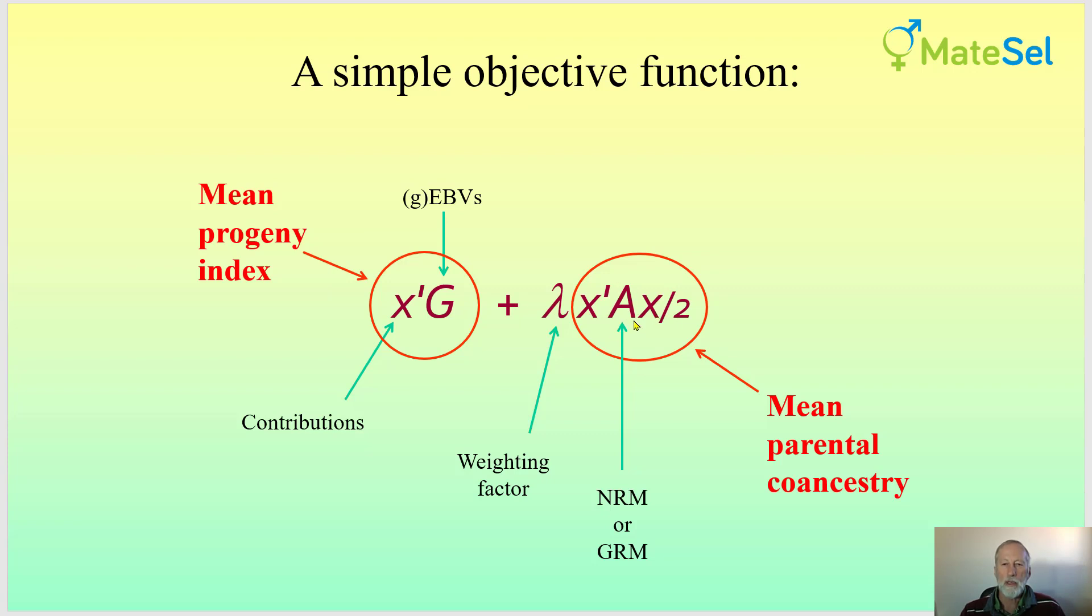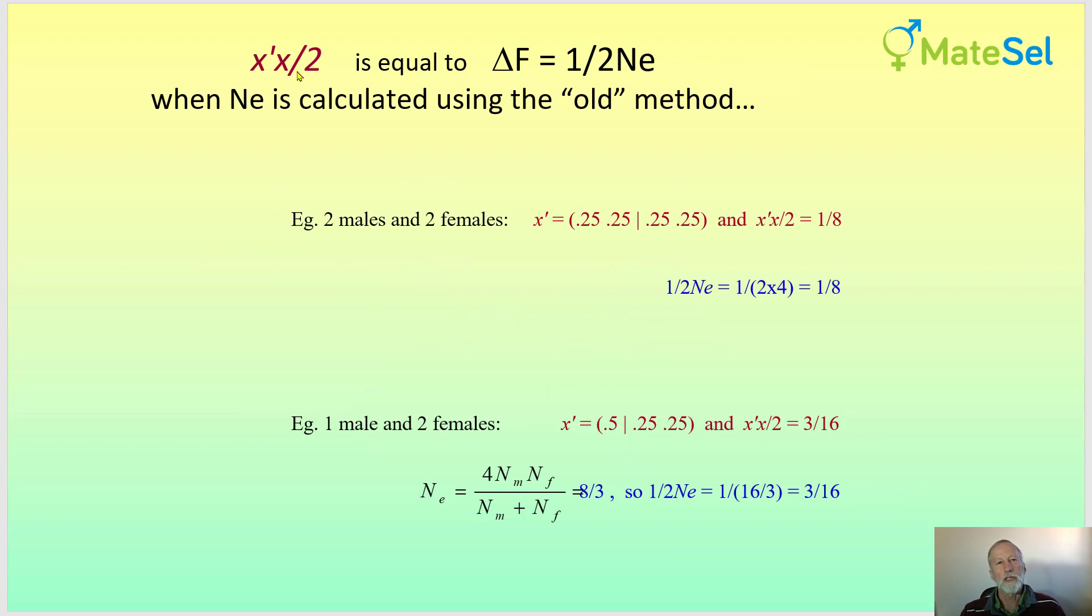Why do we have an A in here? Well, I'll illustrate that to you briefly here. It turns out that if we don't have an A in there, x'x is actually equal to the classic formula for predicting the rate of change in inbreeding. And I'm not going to go through the details in those two slides, but if you want to look at this, you'll see illustration that for different scenarios, these two things are in fact equal.